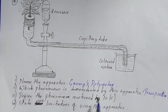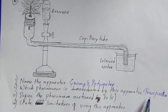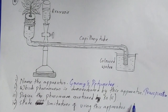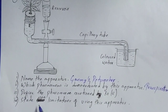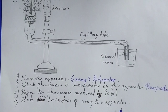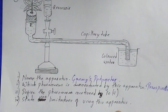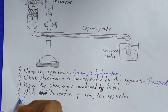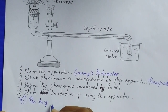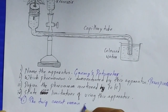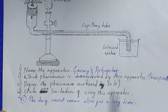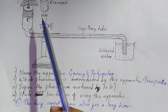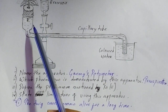Question number three on the diagram: define the phenomenon mentioned in question two, which is transpiration. We have already defined this — it is the loss of water in the form of water vapour from the aerial parts of the plant, known as transpiration. The last question, question number four: state one limitation of using this apparatus. One limitation of Ganong's potometer is that the twig cannot remain alive for a long time, because there is no mud and it is surviving only in water.